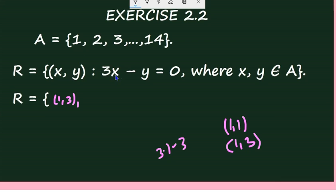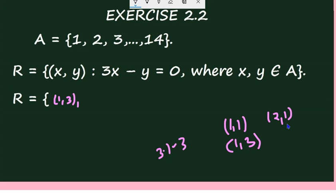Since (1,3) is in R, we proceed. (1,4), (1,5), ... up to (1,14) cannot satisfy because 3×1 = 3, and 3 minus anything greater than 3 is not zero. So with x = 1, there is only one element: (1,3). Next, let us come to elements starting with 2. Check (2,1): 6 - 1 ≠ 0. (2,2): 6 - 2 ≠ 0. (2,3): 6 - 3 ≠ 0. (2,4): 6 - 4 ≠ 0. (2,5): 6 - 5 ≠ 0.